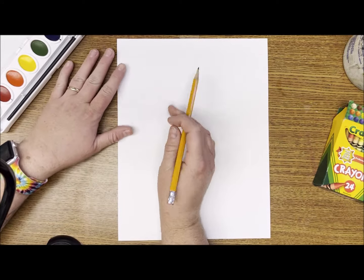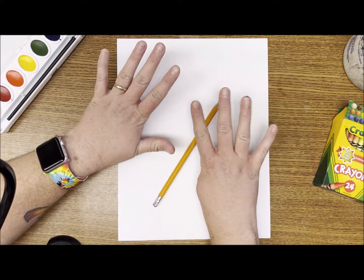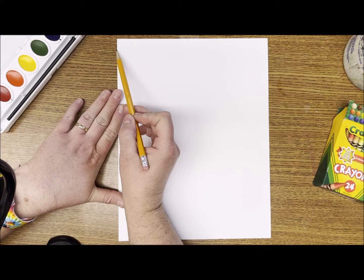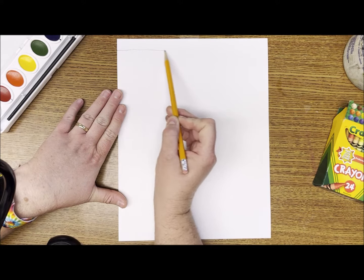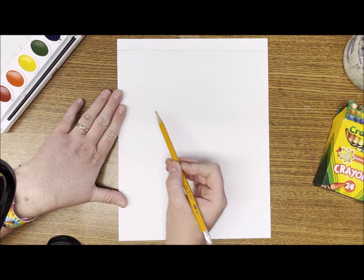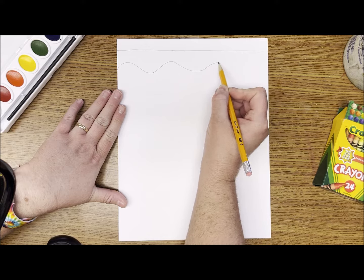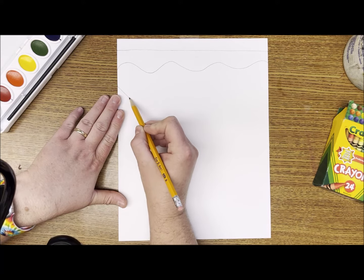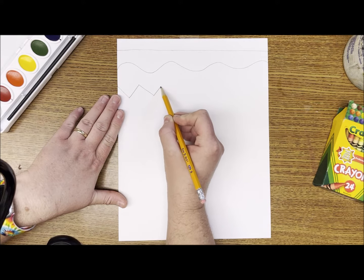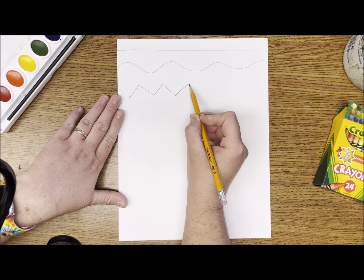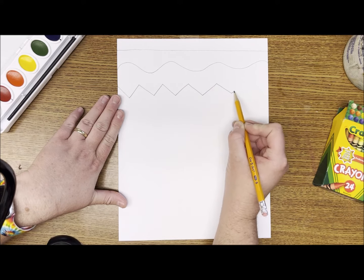Today we are going to be drawing the nine types of lines for our Peruvian textile llama design. First we're going to start with a straight line and then a curvy line. Next is a zigzag line that goes up, down, up, down, up, down.